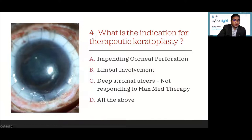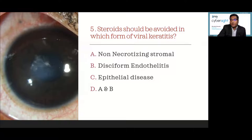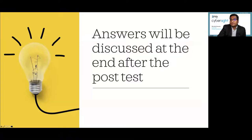Final pre-test question: Steroids should be avoided in which form of viral keratitis? A, non-necrotizing stromal keratitis; B, disciform endothelitis; C, epithelial form of the disease like dendrites; D, both A and B. I think 50 to 60% of you have answered correctly. By the end of the session, I'd like to see at least 90% of you answering correctly.